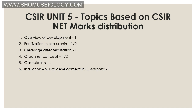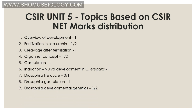Drosophila development covers the life cycle from egg to adult, including gastrulation. The syncytial blastoderm converts to cellular blastoderm, forming structures like imaginal discs that give rise to different organ systems. The genetics of Drosophila development includes gap genes, maternal inheritance genes, pair-rule genes, segment polarity genes, and homeotic genes — including body segmentation mechanisms.